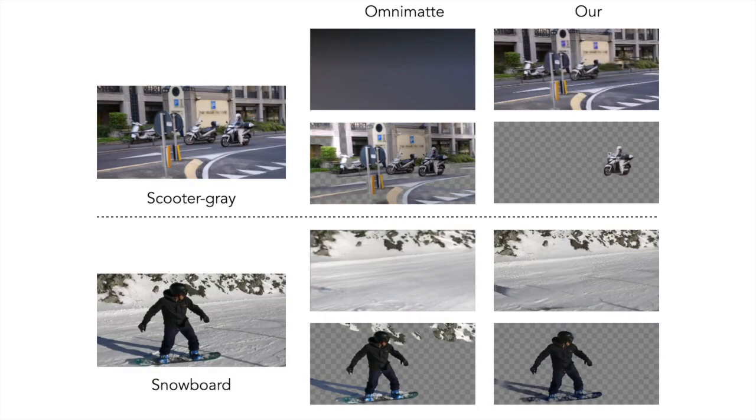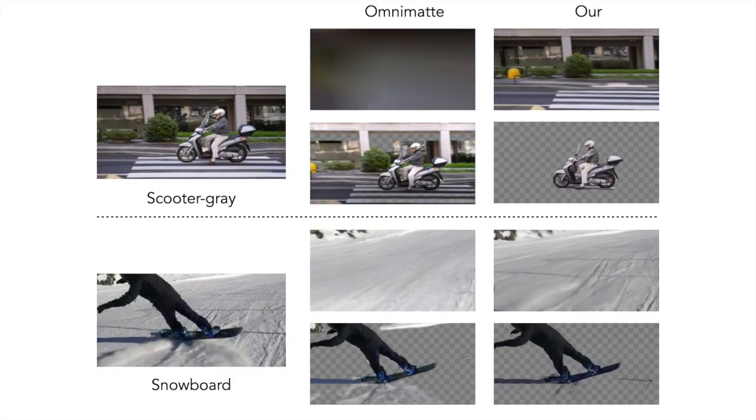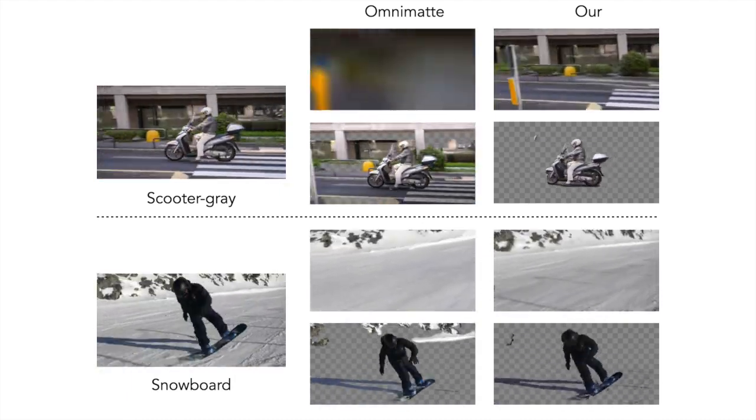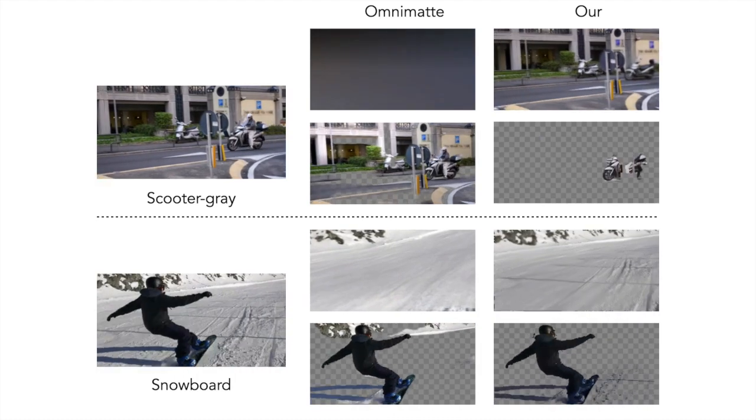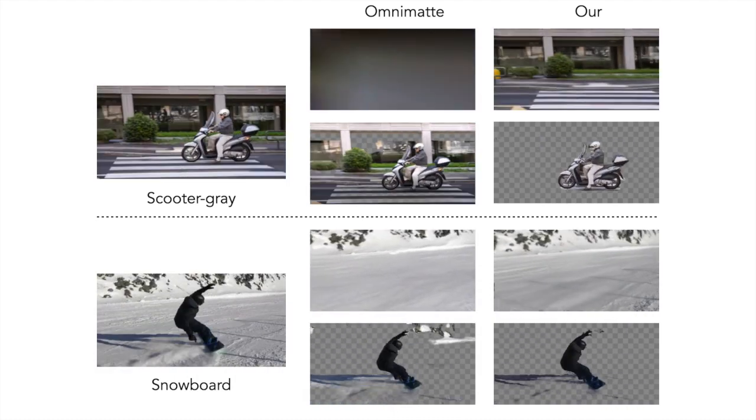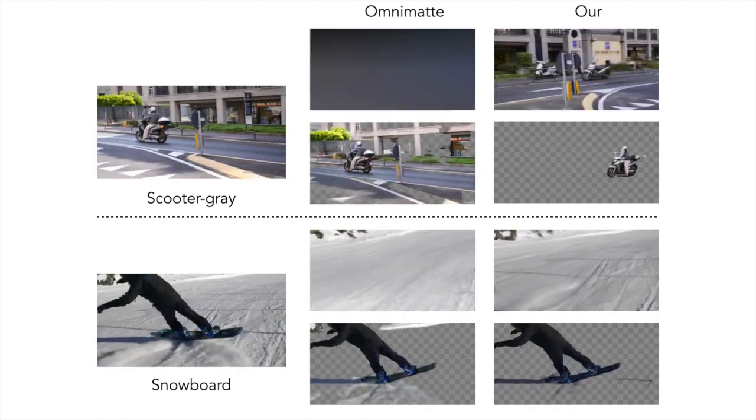We show results for layer decomposition for our model and compare against OmniMAT. Here, we show the decomposition on two videos from the Davis dataset. For the scooter video, OmniMAT is unable to accurately represent the background using a 2D canvas and has to capture the background details in the foreground layer.